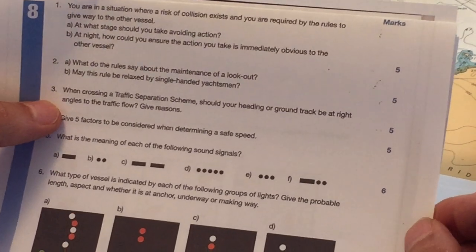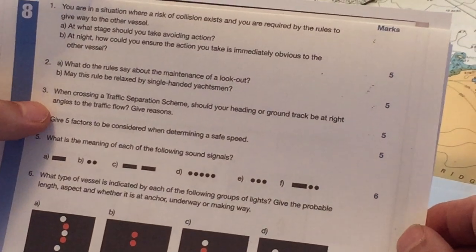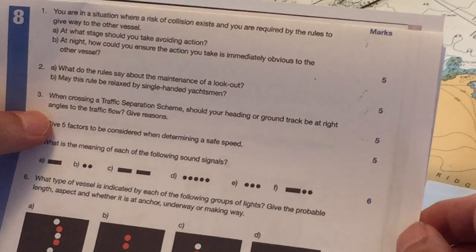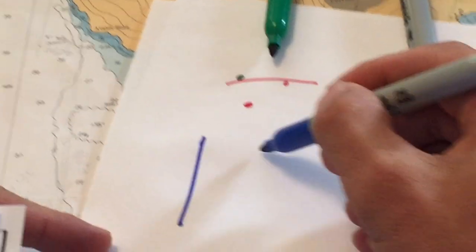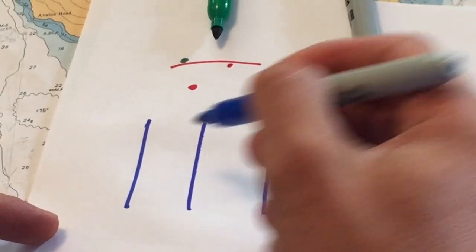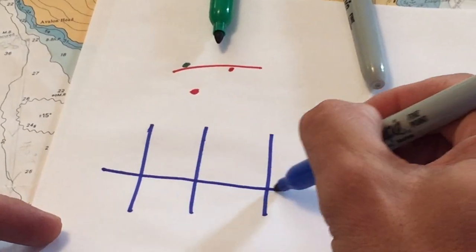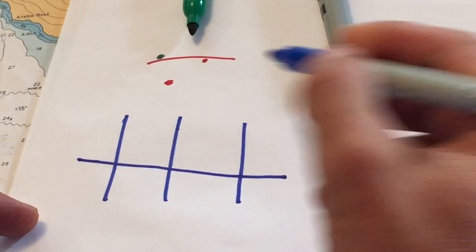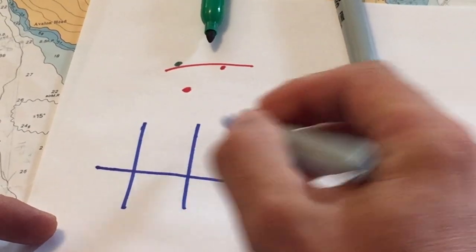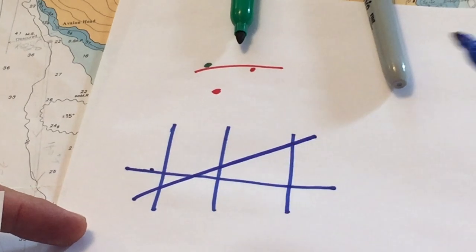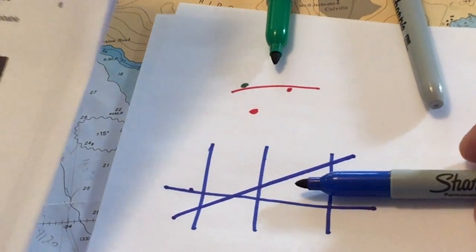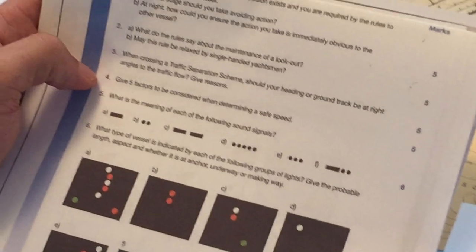When crossing a traffic separation scheme, should your heading or ground track be at right angles to the traffic flow? Give reasons. Absolutely. So traffic separation scheme, cross like that. That's the fastest way to get across, obviously. So, if you're going like this, you can see that it actually takes longer to do that. So, you want to get out of the traffic separation scheme as quickly as possible.